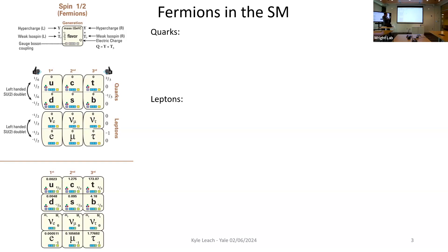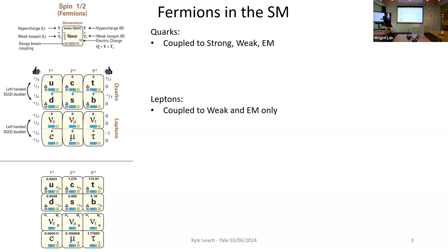We have three generations of quarks: up, down, charm, strange, top, and bottom. We have three generations of leptons: the electron generation, the muon generation, and the tau generation. Neutrinos in the standard model are typically written as electron, mu, and tau, but this is just the way they happen to interact with the weak interaction—it's not really the quantum particle nature of what neutrinos are. Quarks are coupled to the strong, weak, and electromagnetic forces; electrons are coupled to the weak and electromagnetic forces only. Because these two things overlap, you can probe them in radioactive nuclear decay.